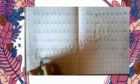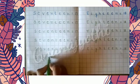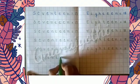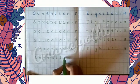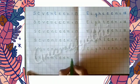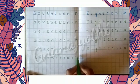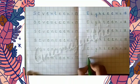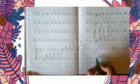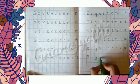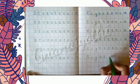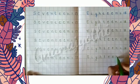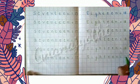See my dear students, while writing you should say and write — then you can easily learn the spellings of these numbers. S E V E N T E E N is 17. E I G H T E E N is equal to 18.